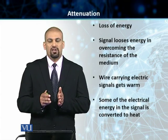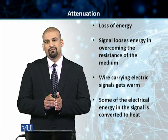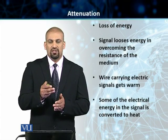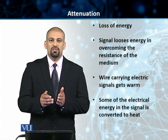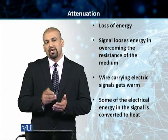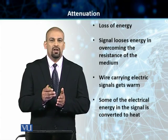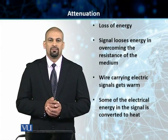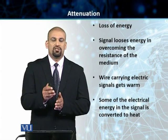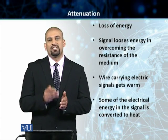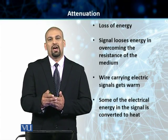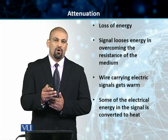The reason attenuation happens is because our transmission medium offers resistance. When the signal travels over a transmission medium, it tries to overcome this resistance, and in the process loses some of its energy, mostly in the form of heat. If an electric current is passing through a wire, the wire normally gets warm because the electrical signal — the voltage passing through that wire — is dissipating energy to overcome the resistance of the copper wire, and that energy is released in the form of heat.